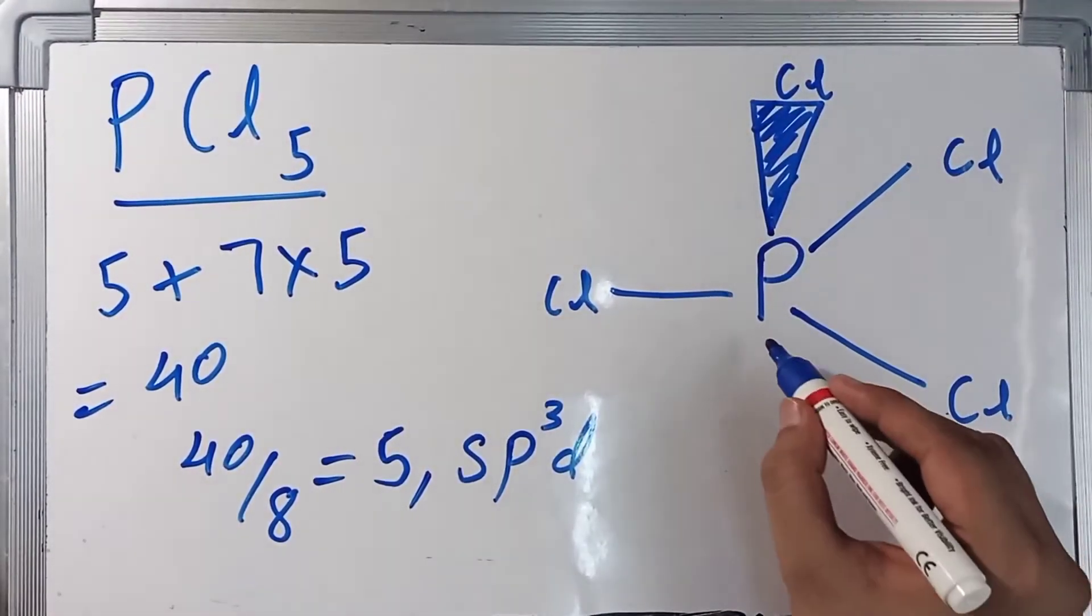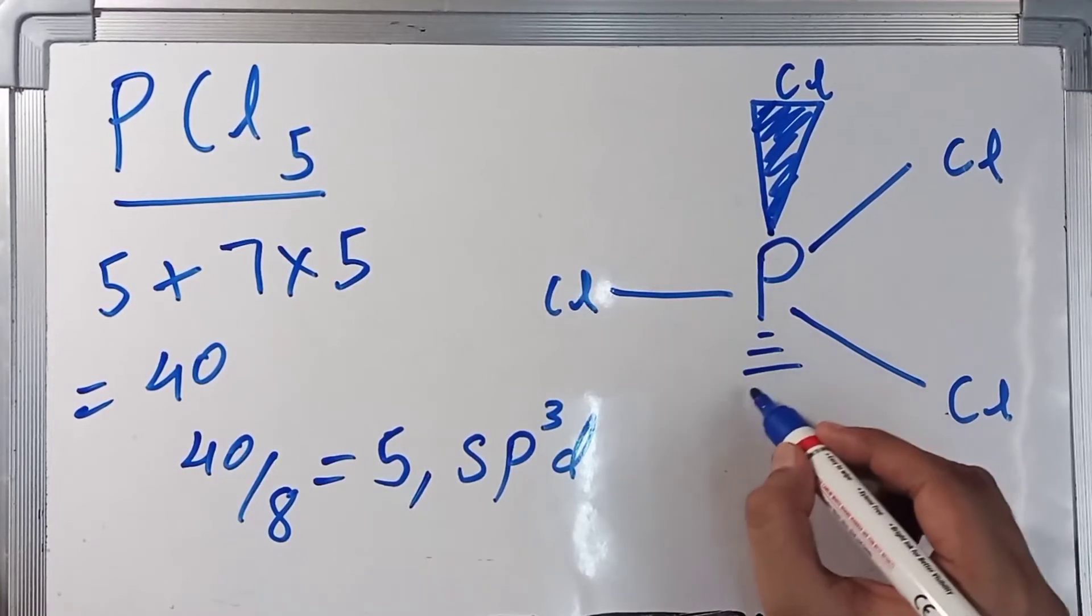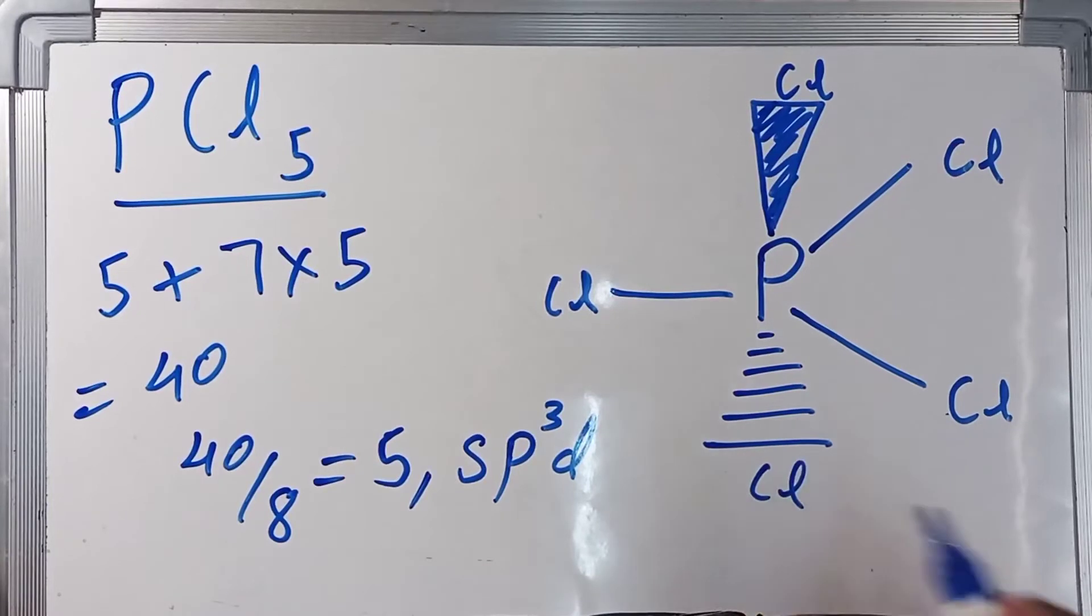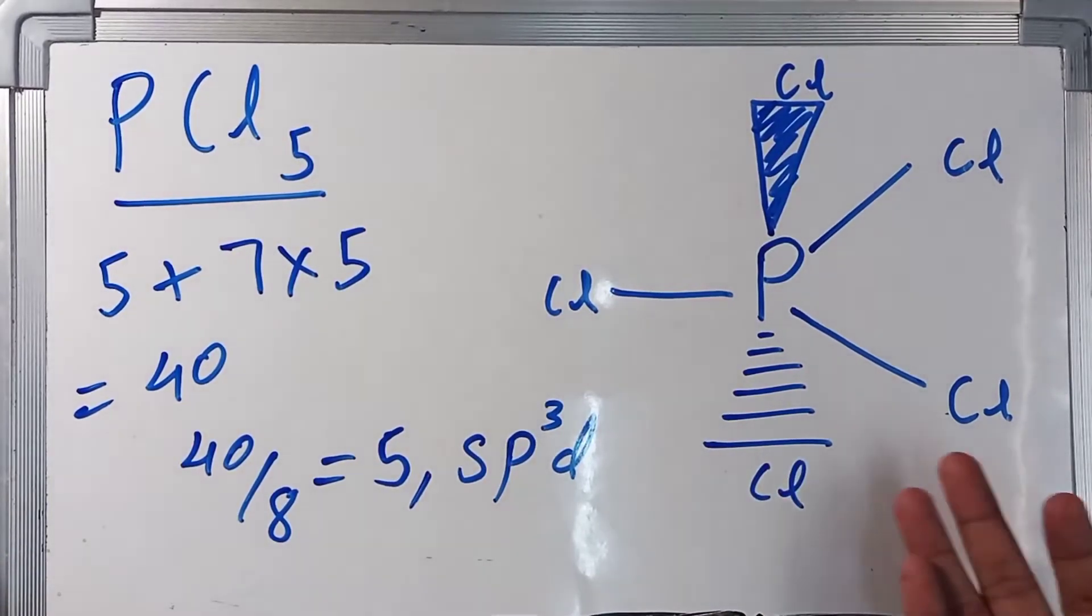And one Cl will be below this plane. So this is the structure of PCl5. Now I'll try to draw a more comprehensive diagram of PCl5 so that you get a better conception of the structure.